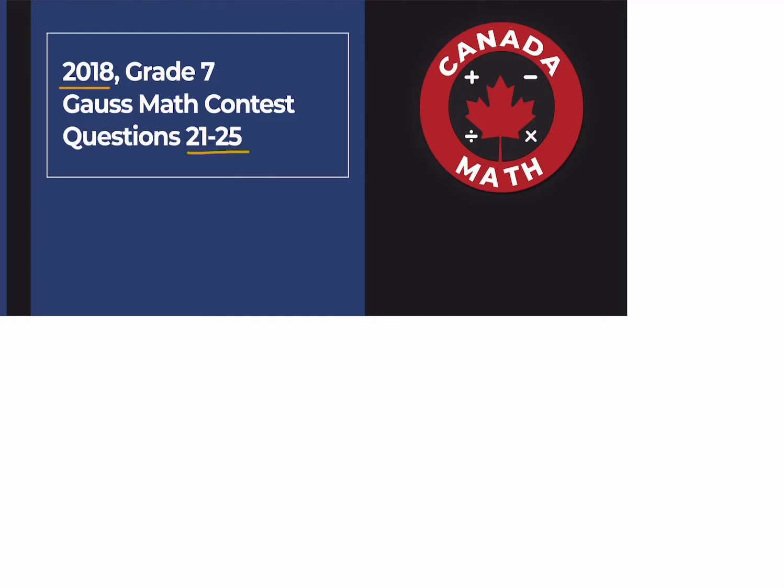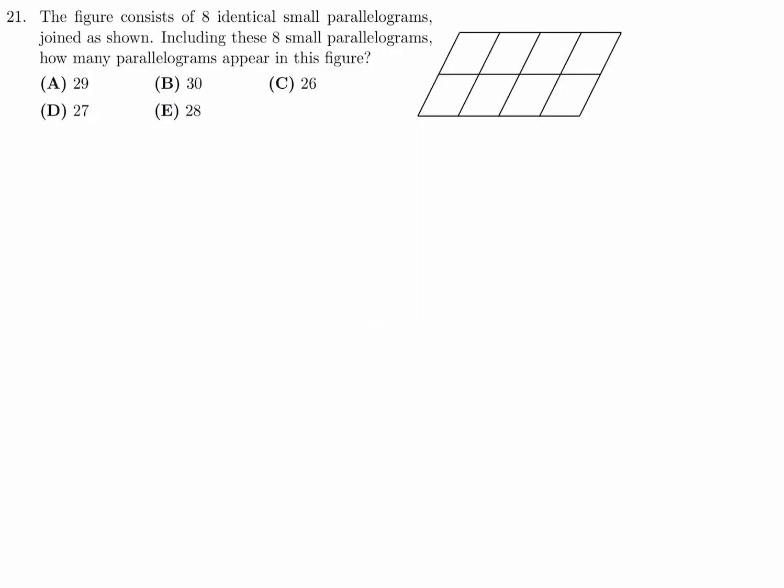Questions 21 through 25 on the 2018 Grade 7 Gauss Math Contest. The figure consists of eight identical small parallelograms joined as shown, including these eight small parallelograms. How many parallelograms appear in this figure?